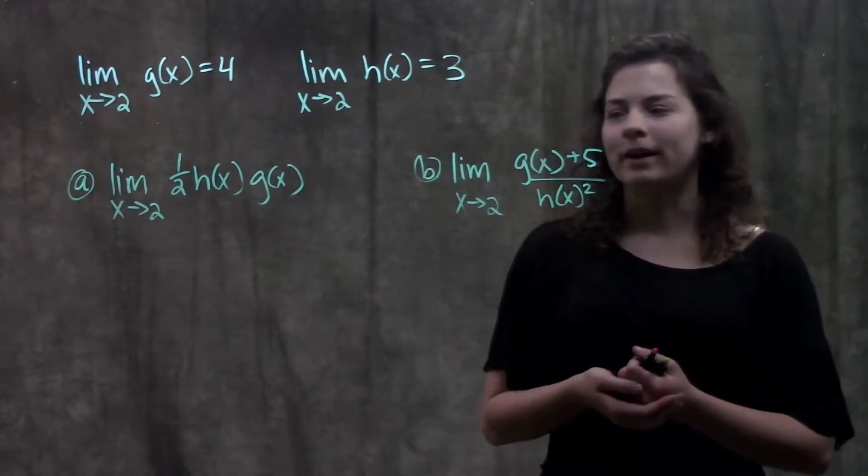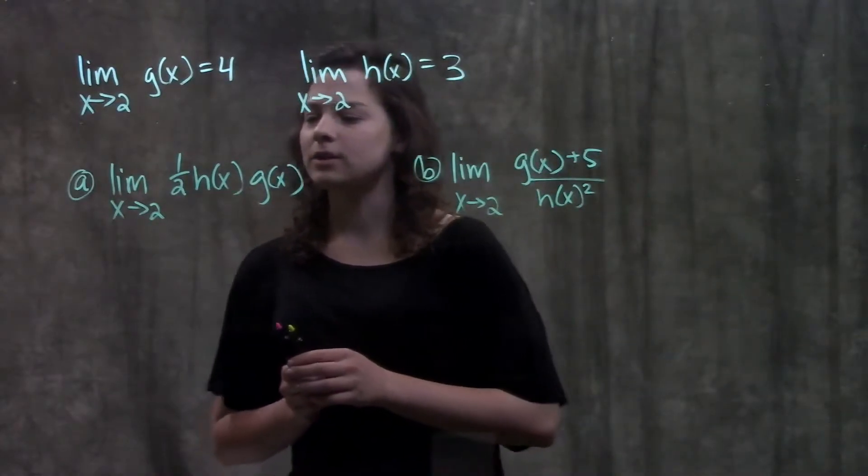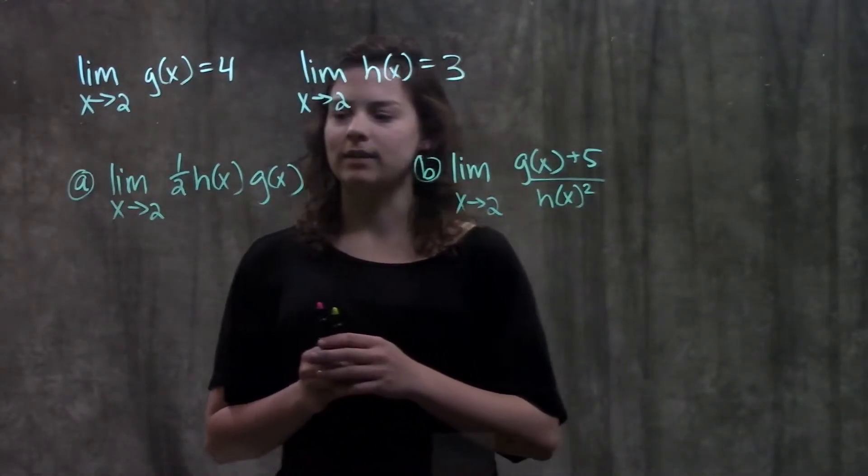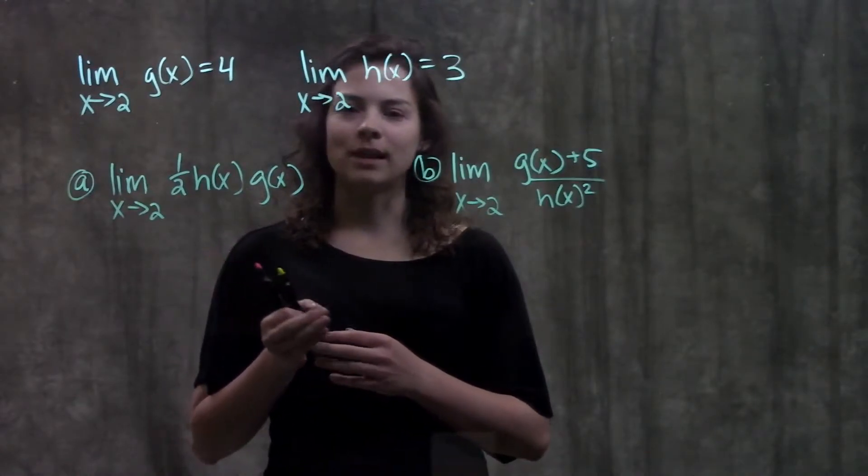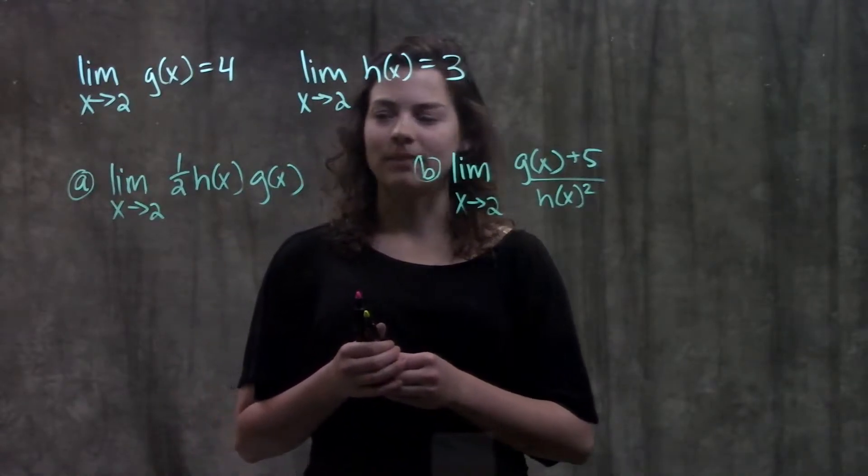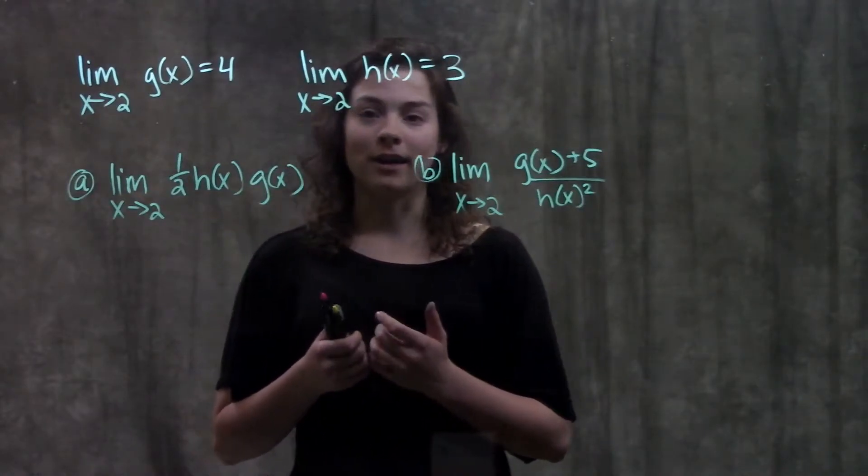So looking at this first part here, it's asking for the limit as x approaches 2 of 1 half h of x times g of x. We're going to solve this the same way we've been solving these problems in this section by splitting up the limit using our limit laws.